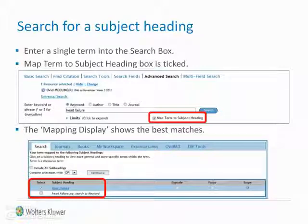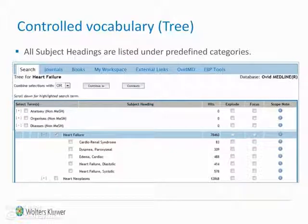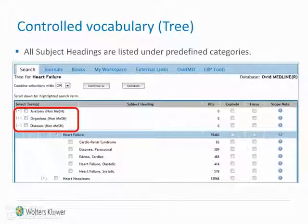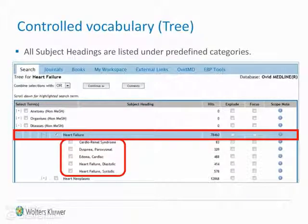You can also click on the highlighted term to view its position in the database thesaurus. In the MEDLINE database a tree structure is used to index the thesaurus terms. All subject headings are listed in alphabetical order within their predefined categories. Your selected term will be automatically highlighted and on the right you will see the number of records indexed with that term. Any related terms will be shown just below your main term, as we can see in the example for heart failure.